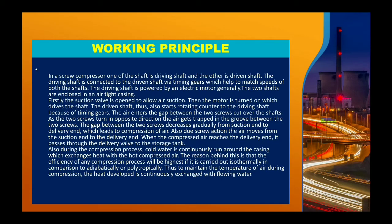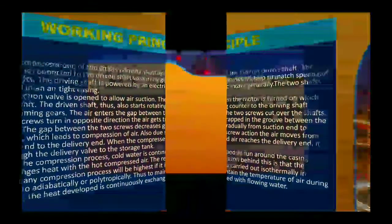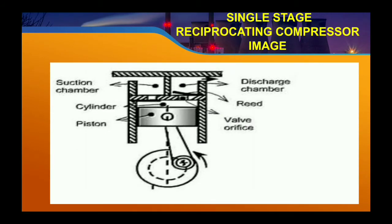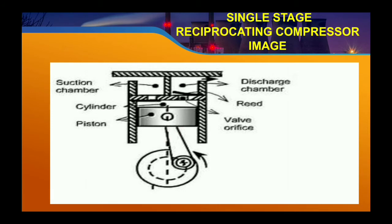The next type of compressor is the single stage reciprocating compressor. Here you can see the image of a single stage reciprocating compressor. This is the suction chamber, this is the discharge or outlet chamber, and this is the cylinder where the piston moves. In a single stage reciprocating air compressor, the entire compression is carried out in a single cylinder. The opening and closing of a simple check valve depends upon the difference in pressure.